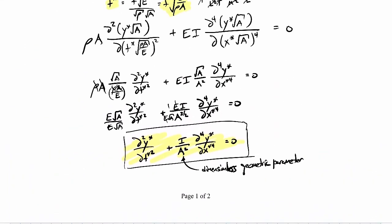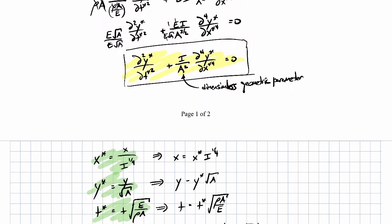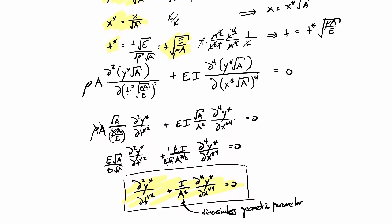Just to describe what some of these quantities represent: y over square root of A is just a geometric parameter — it's like a displacement made dimensionless by a geometric quantity. The same thing applies to the x star quantity — it's also a geometric parameter. The time one is less obvious: the square root of E over rho A.